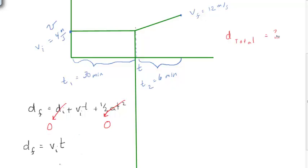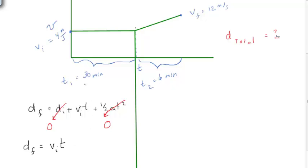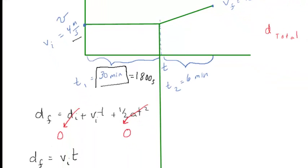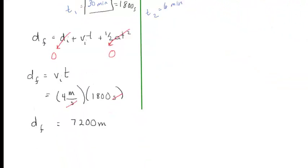We've got the equation simplified. Now we're going to plug our numbers in. But as we start to look at that, we realize we've got 30 minutes up here and over here we have meters per second. So we have to change that 30 minutes into a second rating. So 30 minutes is 1800 seconds. So now we can plug in our numbers. And we get DF is equal to 7200 meters.